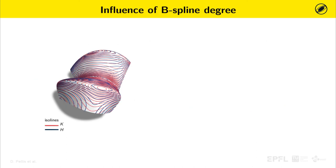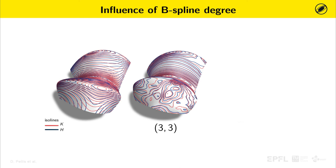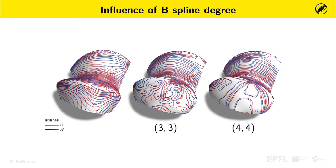One of the main advantages in using B-splines is the control on the surface continuity. Here, we show the same surface optimized with a B-spline of degree 3 and with a B-spline of degree 4. Since curvatures involve second-order derivatives on the surface, isoline continuity requires degree 3 or higher, while smooth isolines require a degree of at least 4.